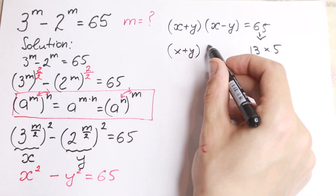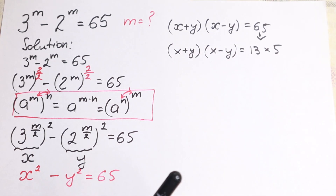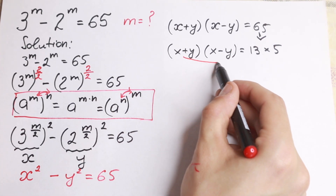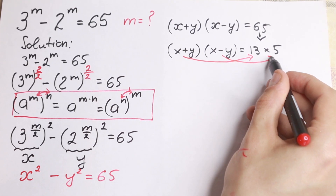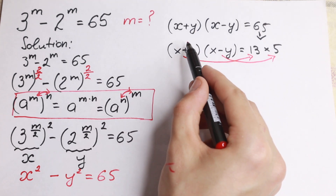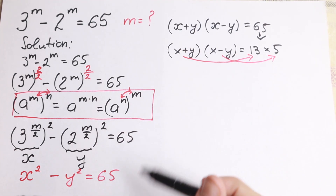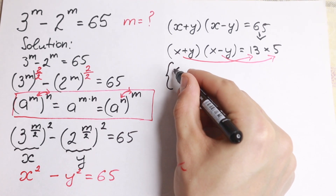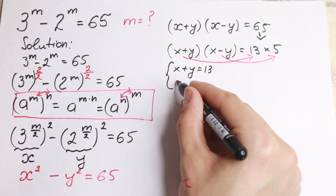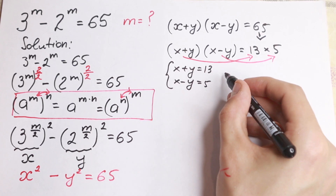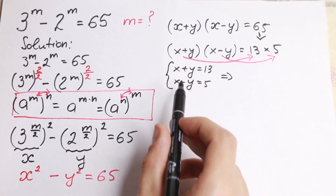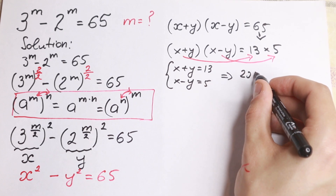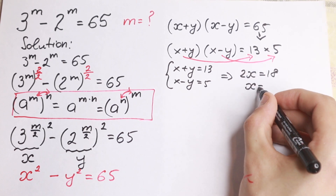Since x plus y is greater than x minus y, we set x plus y equal to 13 and x minus y equal to 5. Adding these two equations cancels y, giving us 2x equal to 18, so x equal to 9.